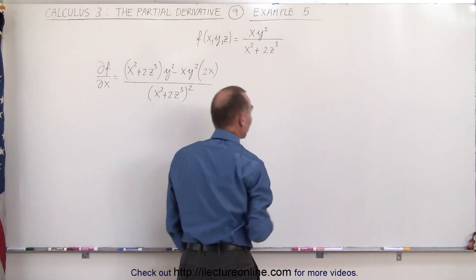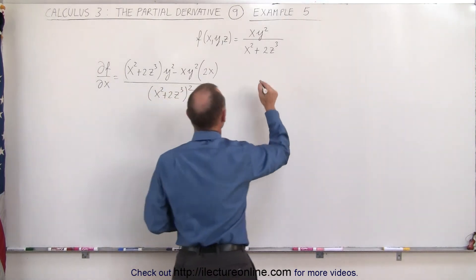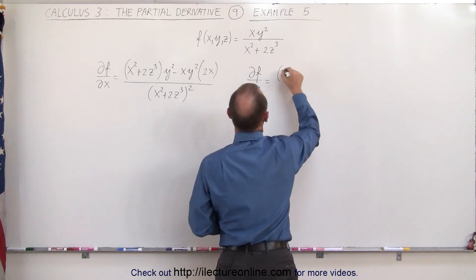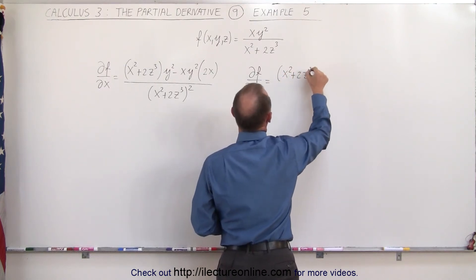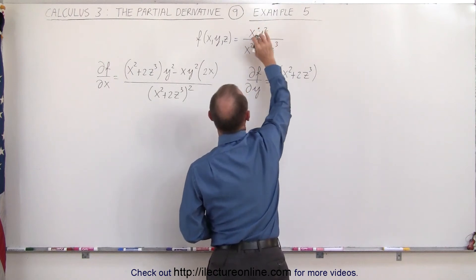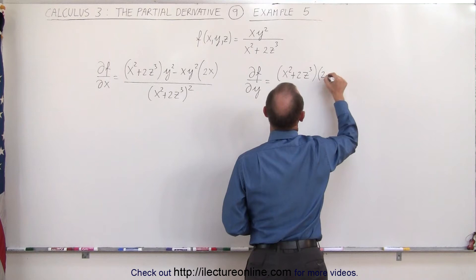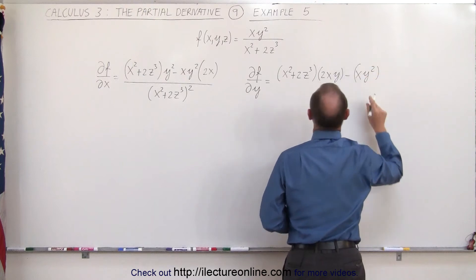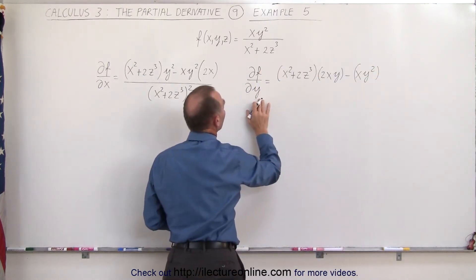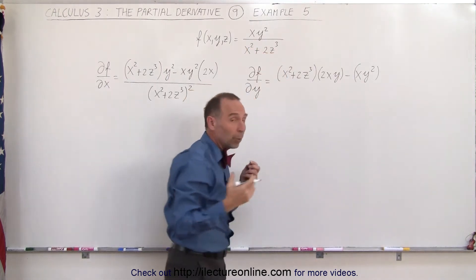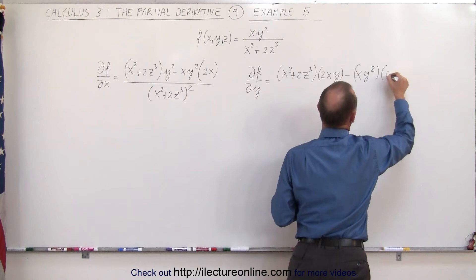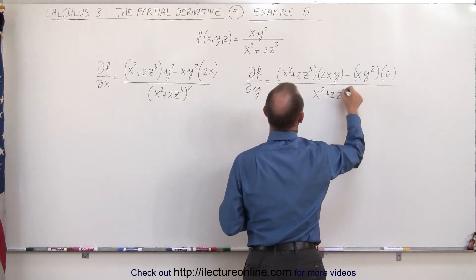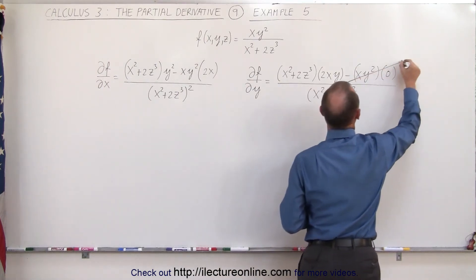Now the partial of the function with respect to y. The partial derivative of the function with respect to y is equal to: we take the denominator, x squared plus 2z cubed, times the derivative of the numerator — notice x here will be the constant, y is a variable — that becomes 2x times y. Minus the numerator, x y squared, times the derivative of the denominator with respect to y. But since the whole denominator is a constant, void of the variable y, the derivative of that is simply 0. All divided by the denominator squared, which is the quantity x squared plus 2z cubed, quantity squared, which means this whole term goes to 0.